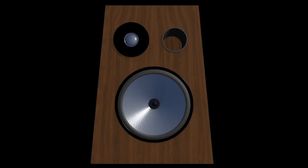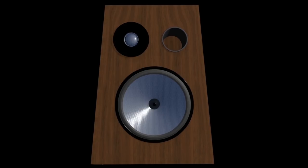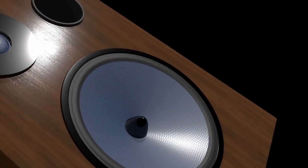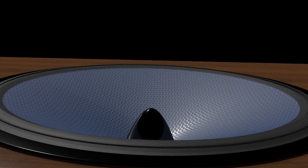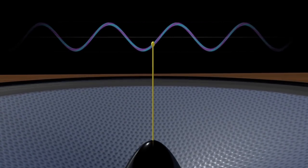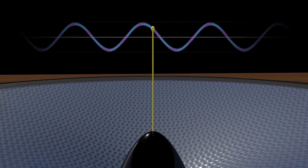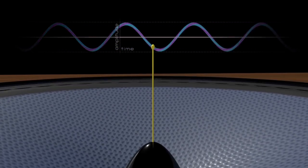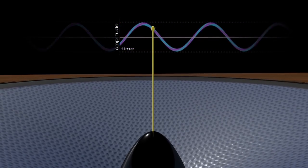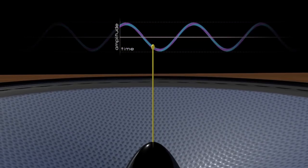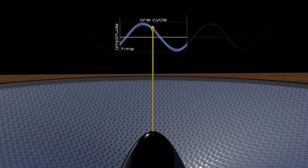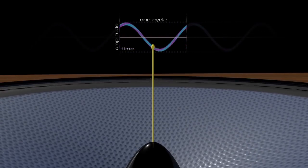An easy way to understand sound is to study how a speaker works. I've made a 3D model to illustrate. This one is playing the most simple or most pure sound possible — a sine wave. The movement of the speaker in and out can be plotted onto a graph where x, or the horizontal axis, is time, and y, or the vertical axis, is amplitude or perceived loudness. The frequency of a sound is measured in hertz, which is literally cycles per second.